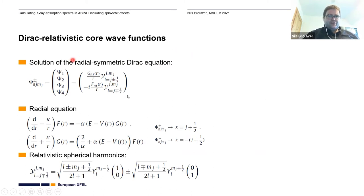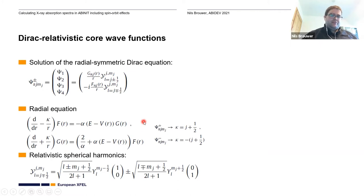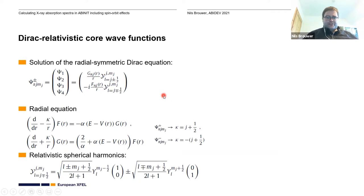It's actually a little bit more than just spin-orbit coupling — it's actually the full relativistic Dirac equation that is now implemented in atompaw. So it can actually calculate four spinors. There's basically an analytical form which consists of radial equations G and F, which have to be solved numerically by atompaw, and there are also the so-called relativistic spherical harmonics. Those are implemented in ABINIT when you want to evaluate the matrix element for the transition from a core level to a valence band state when doing X-ray spectroscopy calculations.